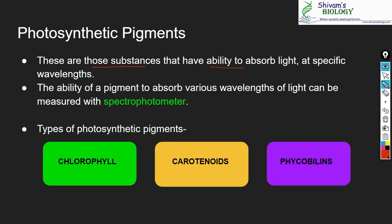Photosynthetic pigments are those substances that have the ability to absorb light at specific wavelengths — various pigments can capture not the whole of sunlight but specific wavelengths. You already know sunlight contains various colors like violet, indigo, blue, etc. Different pigments are specialized to absorb different parts of sunlight. The ability of a pigment to absorb various wavelengths of light can be measured with a spectrophotometer — this can be asked in your NEET exam.